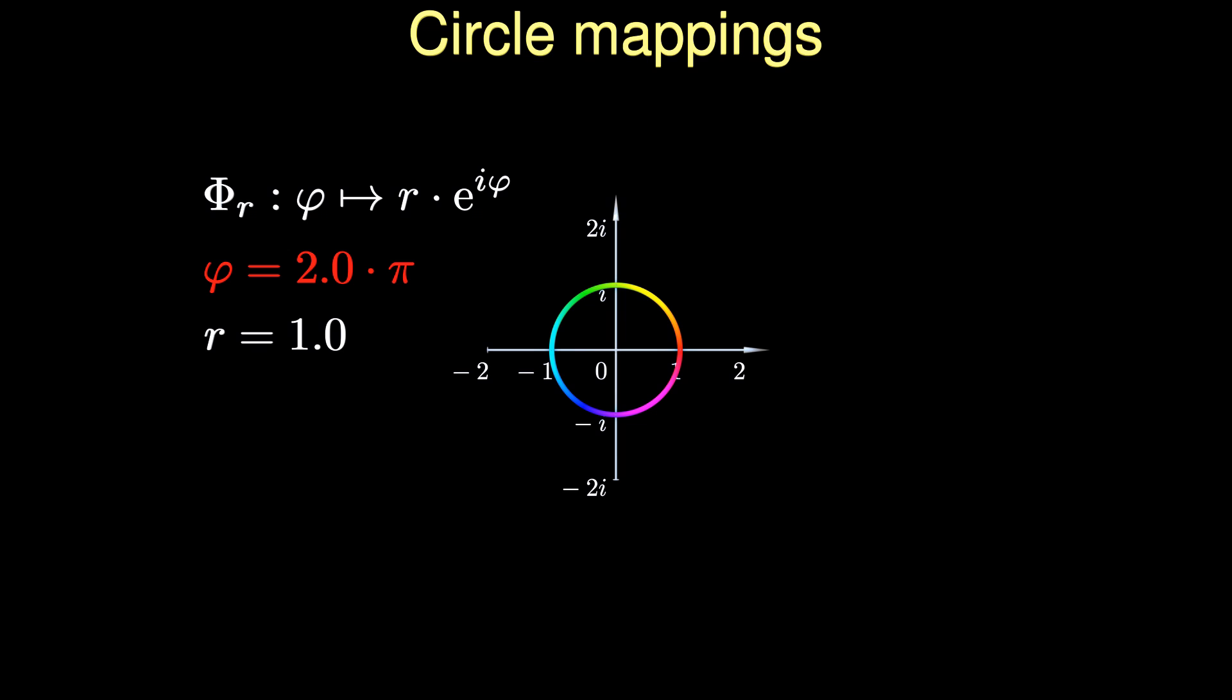The angle is commonly highlighted with a hue value that runs through all colors of the color space. Zero is mapped to the color red. The imaginary direction at 90 degrees corresponds to green and negative real values at 180 degrees are color-coded in light blue.